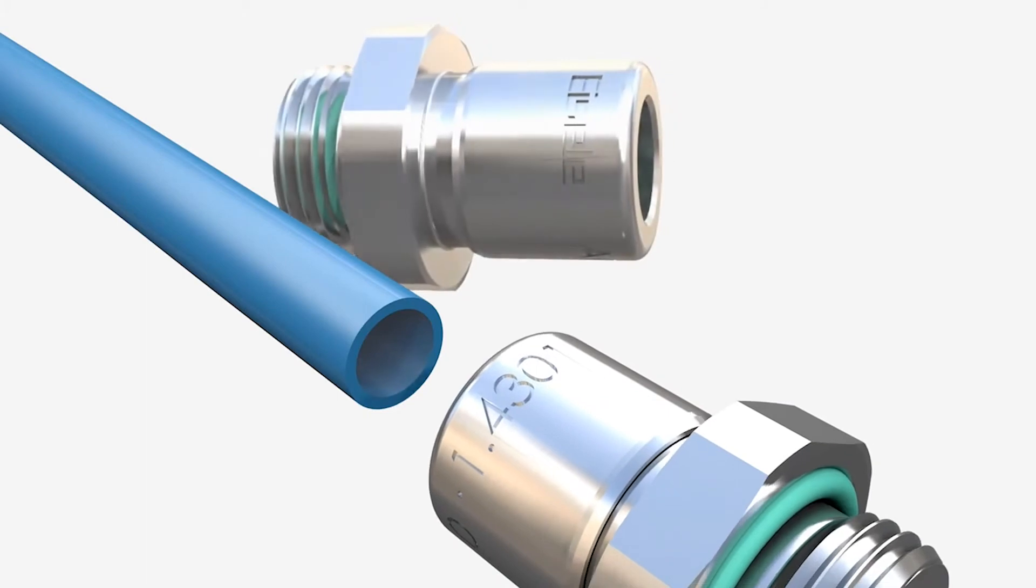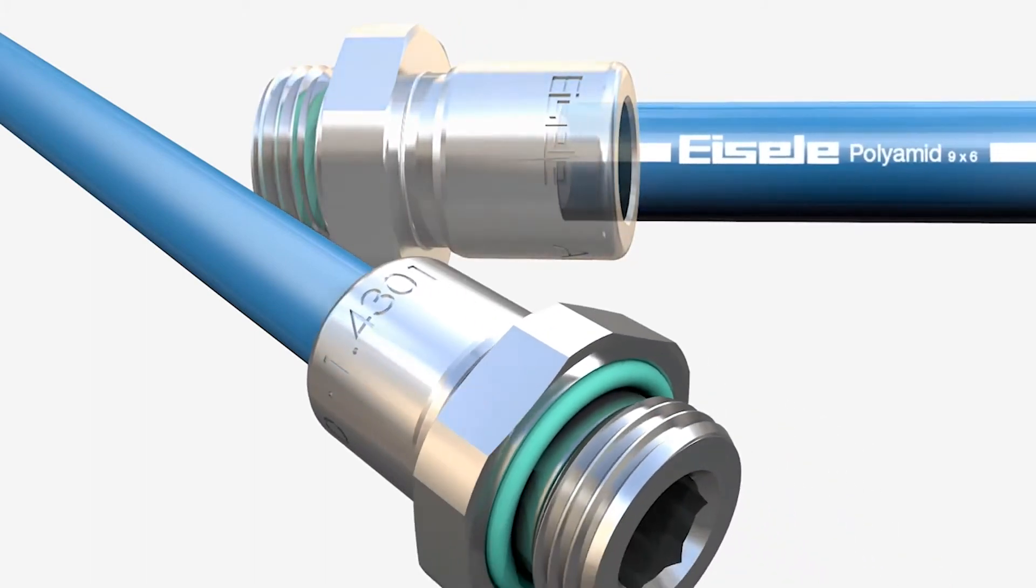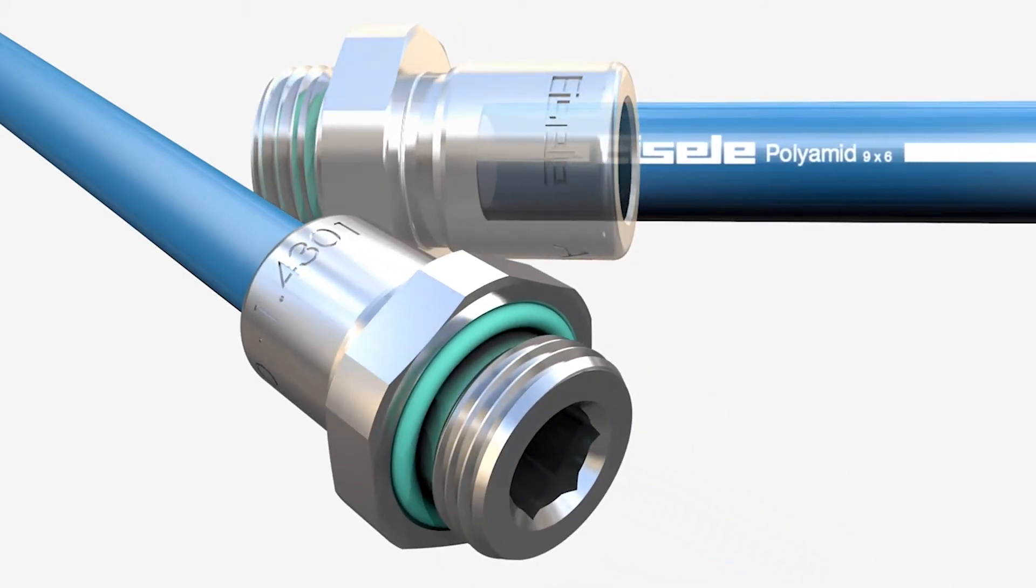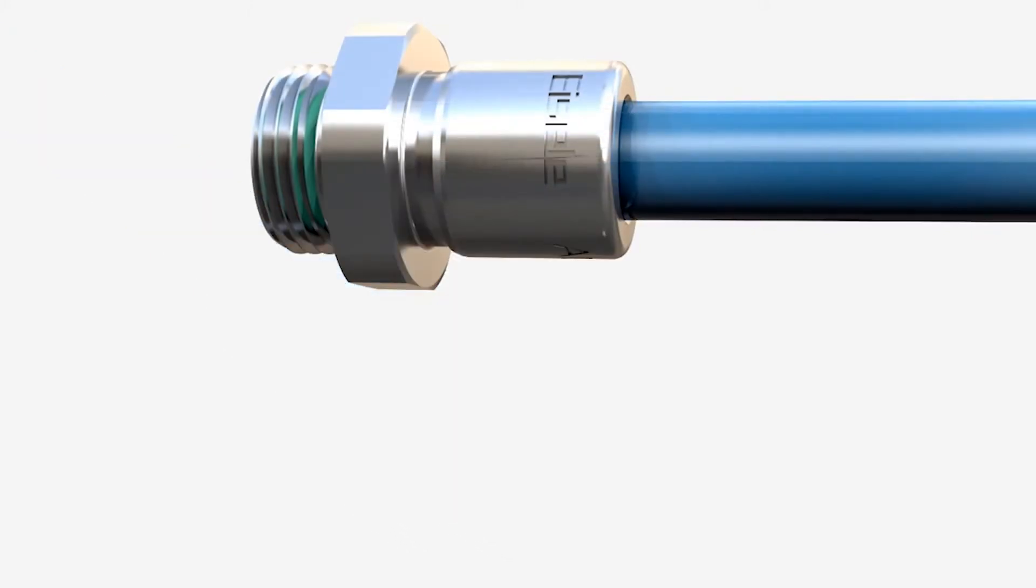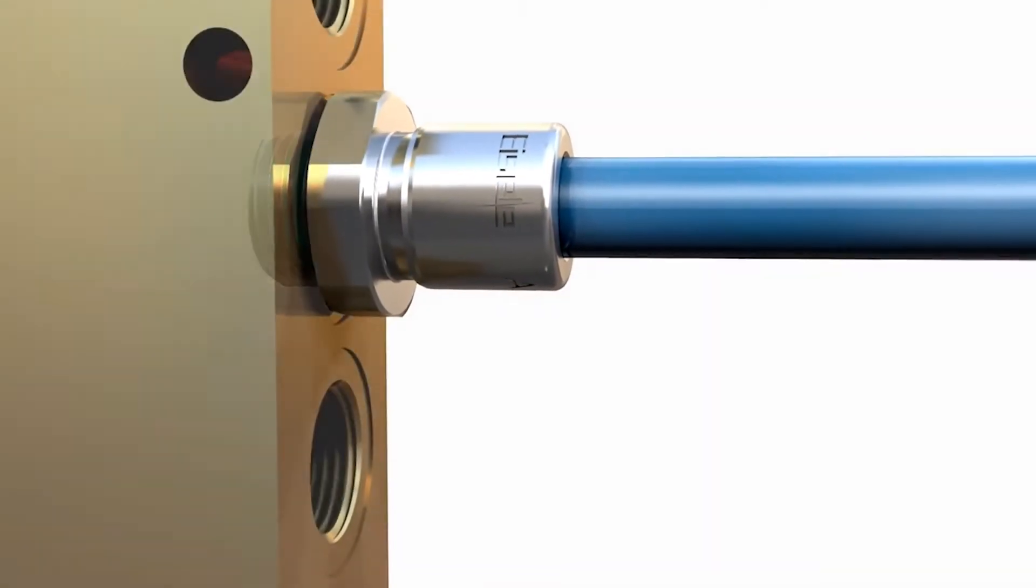Slide the hose end prepared in this manner straight into the connecting component until it reaches the first stop, and then continue until it reaches the perceptible limit stop of the plug-type connector. Now everything is sealed reliably.